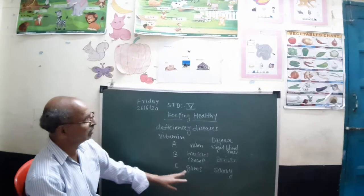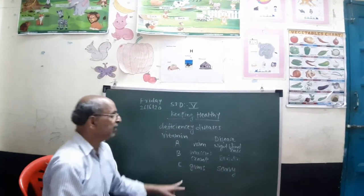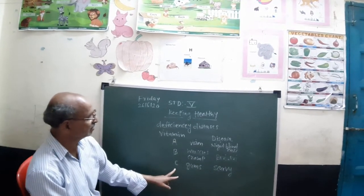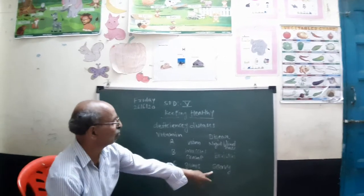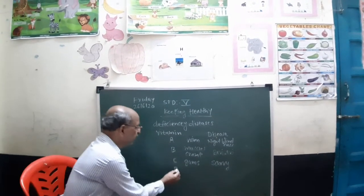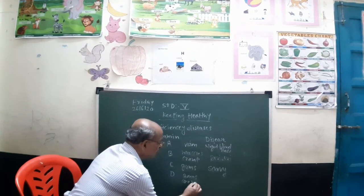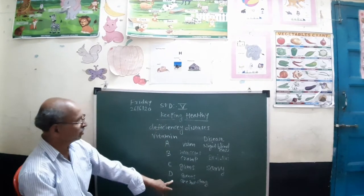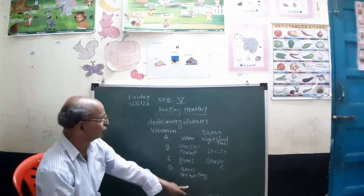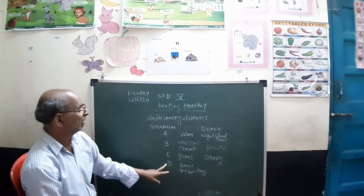We get Vitamin C from fruits like lemon, amla, and orange, which contain a lot of Vitamin C. Those who lack Vitamin C suffer from scurvy. The last important vitamin is Vitamin D. If you are not getting Vitamin D properly, your bones will not be strong. Calcium and phosphorus minerals are required for making bones strong, and these are synthesized with the help of Vitamin D so that the person can absorb calcium and phosphorus.